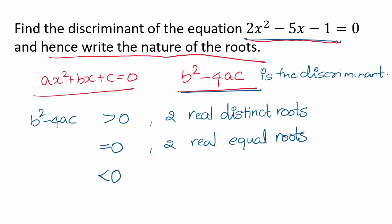If b² - 4ac is less than 0, the square root of a negative number is not possible, so there are no real roots.